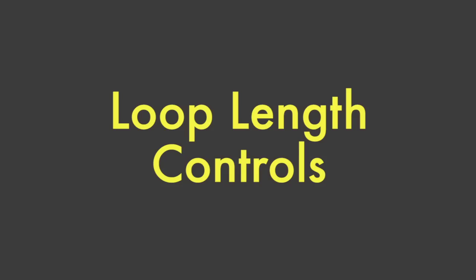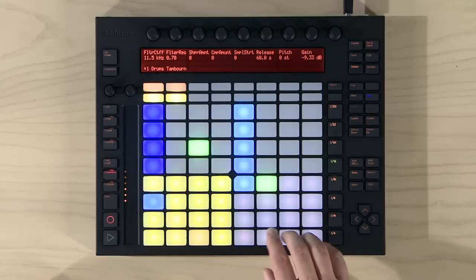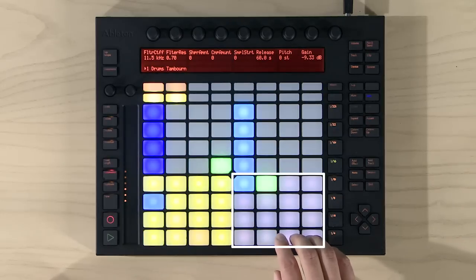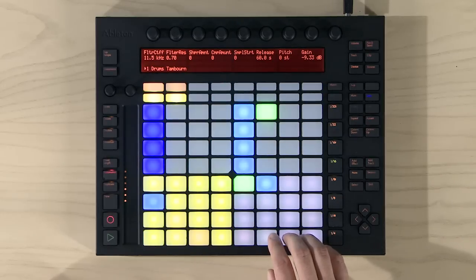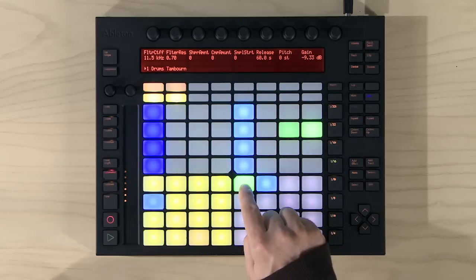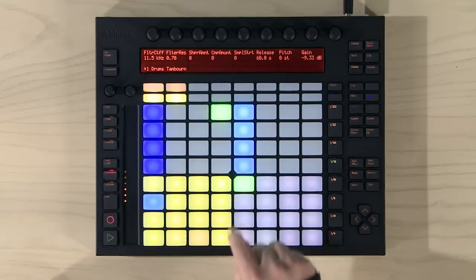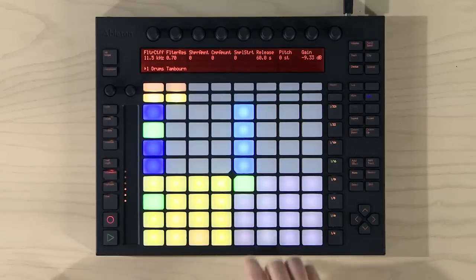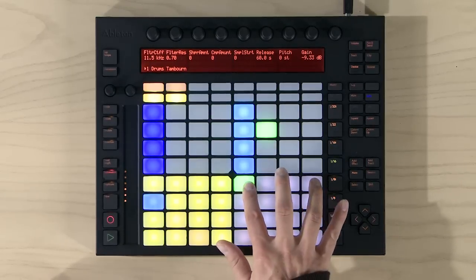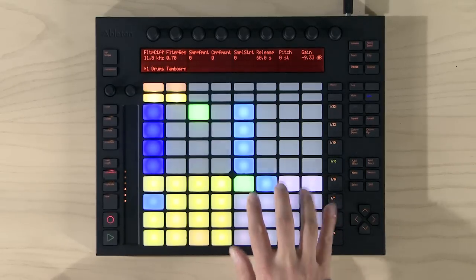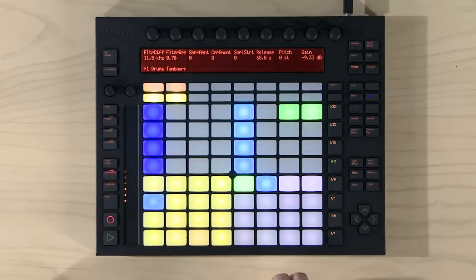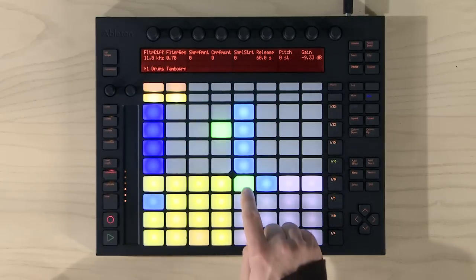The Loop Length controls allow you to set the length of the clip's loop. Each pad here corresponds to one of sixteen possible bars, so you can quickly create a one-bar loop or a longer loop. Let's stick with one measure for now.